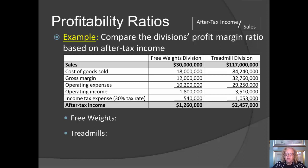Now let's look at the profit margin ratio based on after-tax income. For the free weights division, we divide after-tax income by sales and get 4.2%. So, after considering all expenses — cost of goods sold, operating expenses, and taxes —